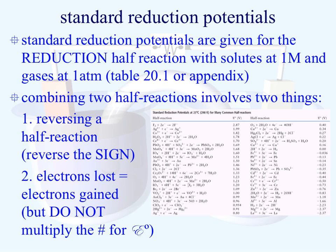We can combine two half-reactions to give us additional information about the oxidation and reduction processes occurring in a voltaic cell. Two things we need to do: first, reverse one of the half-reactions and reverse its sign, because one is going to be oxidation and one reduction. Second, make sure the electrons lost equal the electrons gained — similar to Hess's Law. However, unlike Hess's Law calculations, we do not multiply or divide the E naught value, even though we may multiply the equations to balance electrons.